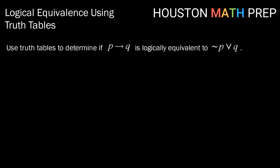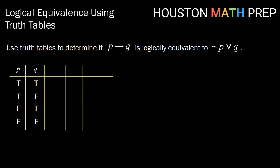Let's use truth tables to determine if P implies Q is logically equivalent to not P or Q. We'll start with P and Q, then create P implies Q, then not P, and finally not P or Q.